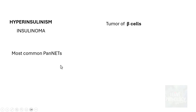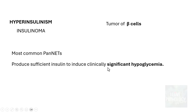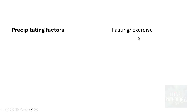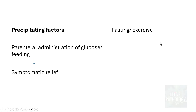Now let's learn in detail about insulinoma, which is a cause for hyperinsulinism. This is a tumor of beta cells and is the most common PAN-NET. Fortunately, the majority are benign. They produce so much insulin that they clinically induce significant hypoglycemia. When glucose drops below 50 mg/dL, symptoms can include confusion, stupor, and loss of consciousness. Precipitating factors include fasting or exercise, and there is immediate symptomatic relief upon glucose administration.